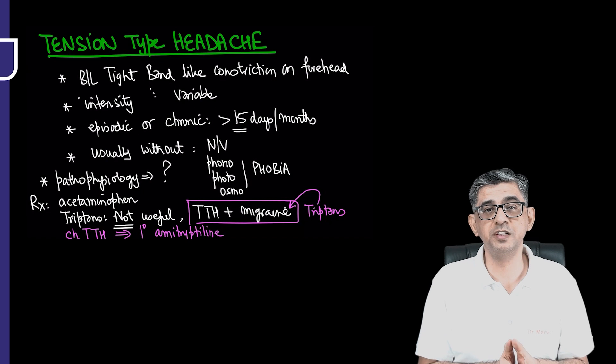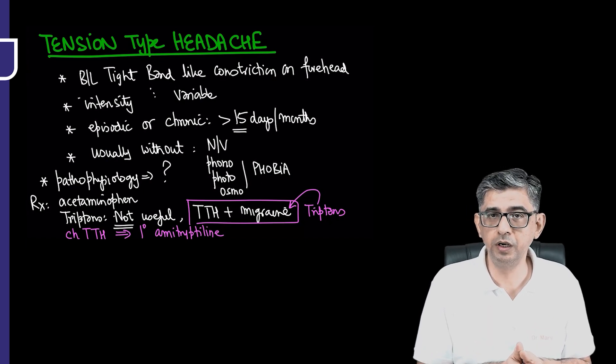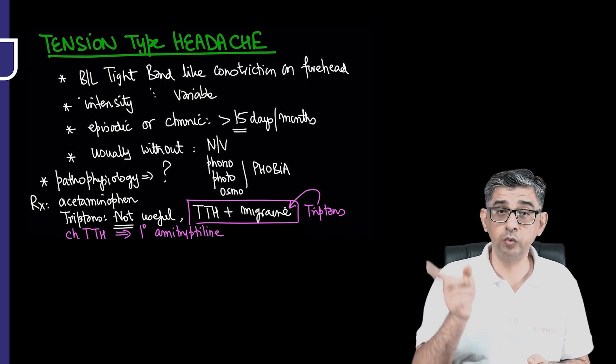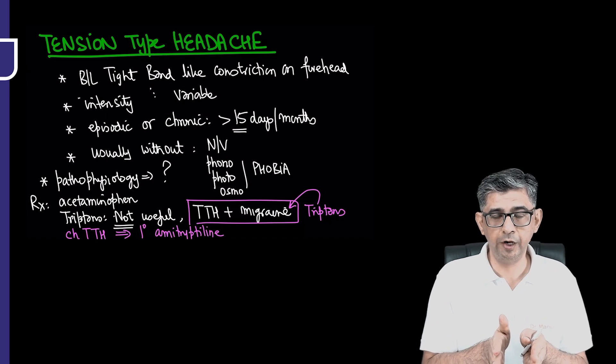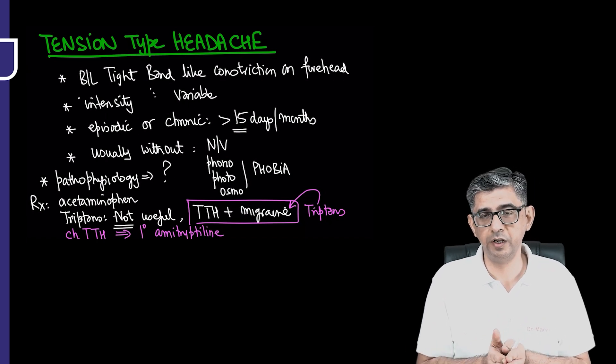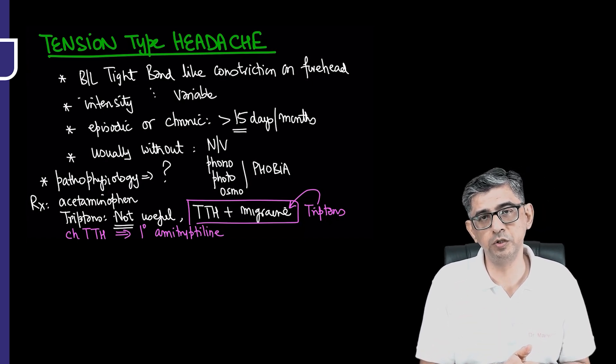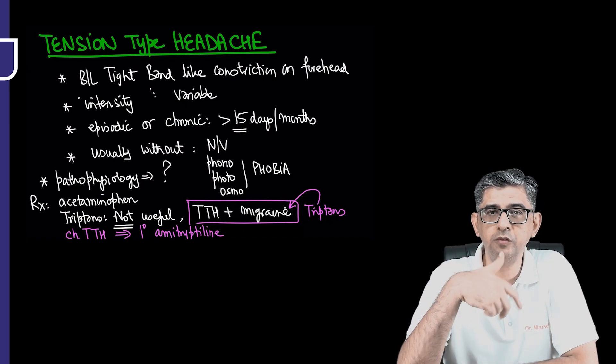But when it comes to patients having trigeminal autonomic cephalalgias, the peak onset of headache can be attained as early as 15 minutes. So one, the onset of severity would be relatively earlier in trigeminal autonomic cephalalgias, and even the duration will be shorter. In migraine the shortest attack I told you was four hours, and in the subsequent video on trigeminal autonomic cephalalgias, the total duration of headache episodes will be relatively shorter.